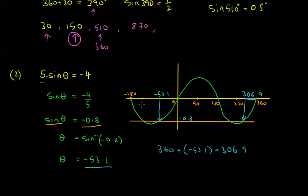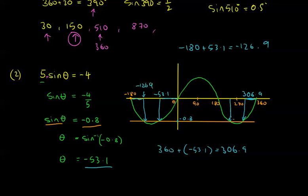Now let's work out the other one in the trough. This gap is 53.1. What I need to do is come in 53.1 from minus 180, so I do minus 180 plus 53.1, which gives minus 126.9. That one there is minus 126.9. But to find the corresponding positive one, since this is 360 away from minus 126.9, I do minus 126.9 plus 360, and that gives 233.1. So this one is 233.1 degrees.